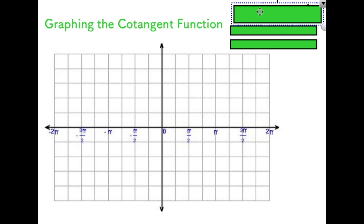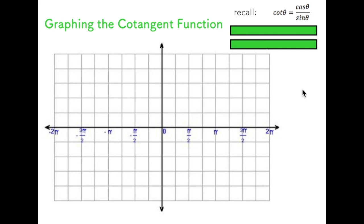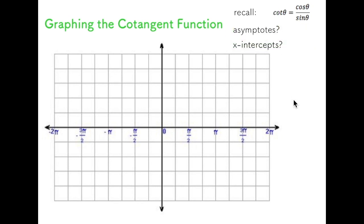I'm going to start by writing cotangent as cos over sin. I can do this because cotangent is the same as 1 over tan. I know tan is sine over cos, therefore cotangent is cos over sine. This is going to be helpful because it's going to allow me to do an asymptote and an x-intercept analysis on this function in order to plot the graph of the cotangent function.